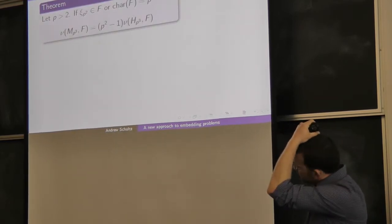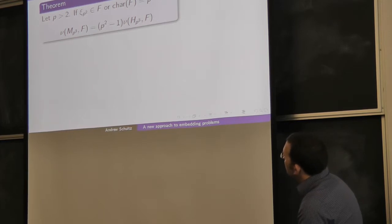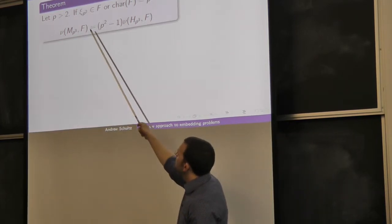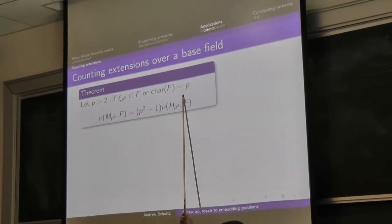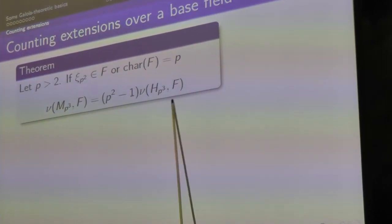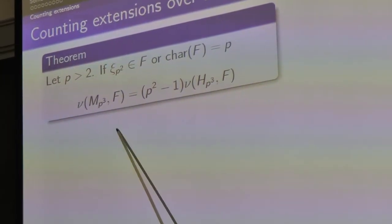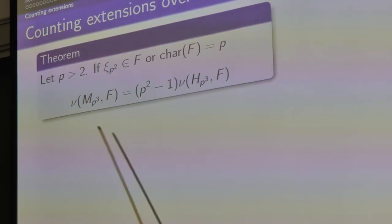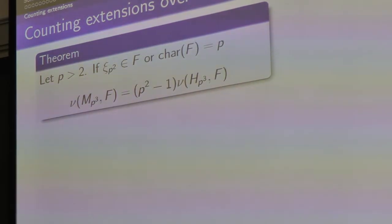Let's count extensions over a base field. If p is bigger than 2, and either you have p-squared roots of unity in your field or your characteristic is p, then the number of HP cubed extensions of F precisely dictates the number of MP cubed extensions — you just multiply by p squared minus 1 to get that count. This result was proved in the mid-1980s by Bradstrom.